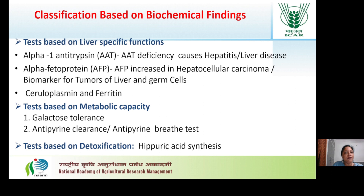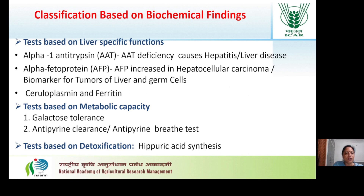Tests based on liver-specific functions include: alpha-1-antitrypsin, AAT, whose deficiency causes hepatitis or liver disease; alpha-fetoprotein, AFP, which is increased in hepatocellular carcinoma and is a biomarker for tumors of liver and germ cells; and ceruloplasmin and ferritin. Tests based on metabolic capacities include lactose tolerance and antipyrine clearance test. Tests based on detoxification involve hippuric acid synthesis.